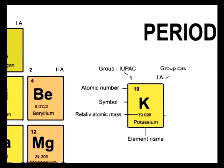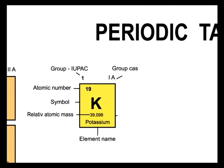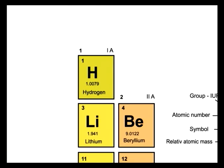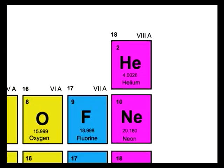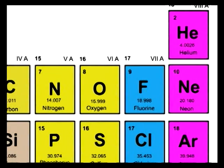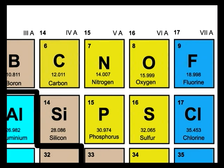Most periodic tables, if you look just above that chemical symbol, you will see a number — that's the atomic number. That's the number of protons in the nucleus of that atom. Every element on the periodic table has a unique number of protons, and that determines what element you're looking at. Hydrogen has an atomic number of one, helium has two, carbon has six, and oxygen has eight. It's telling you at a glance how many protons you have in the nucleus.